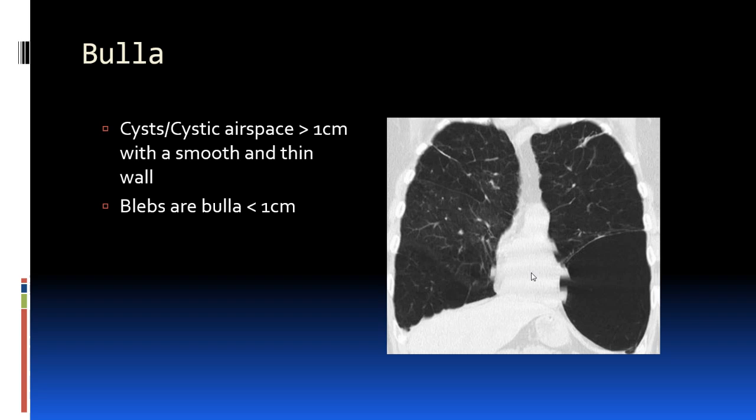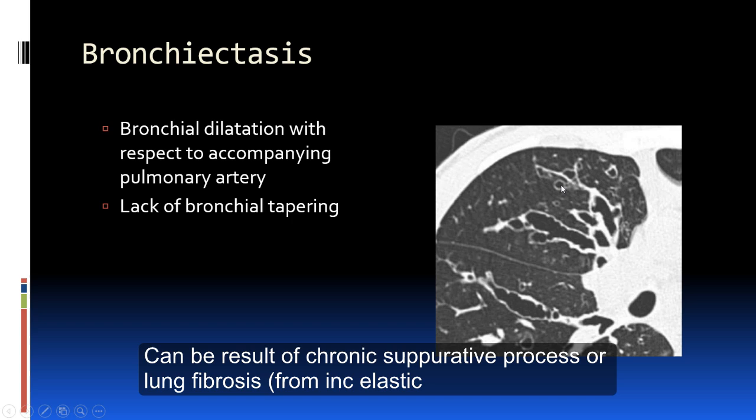Bullae are defined as air-containing or cystic spaces greater than 1 centimeter with a smooth and thin wall — usually less than 1 millimeter. Blebs are basically bullae that are less than 1 centimeter and are usually found in the subpleural spaces.